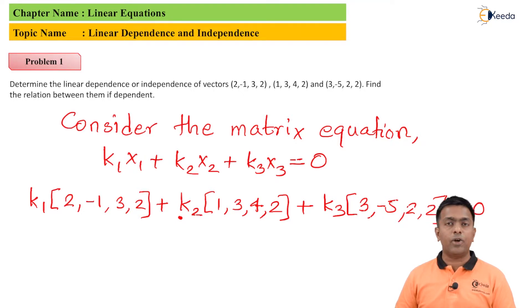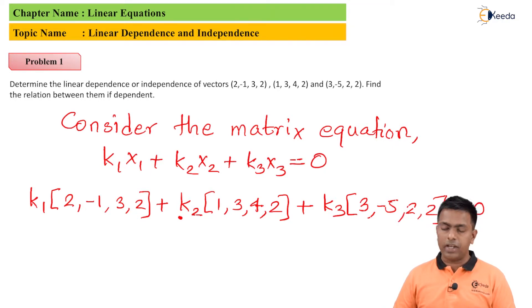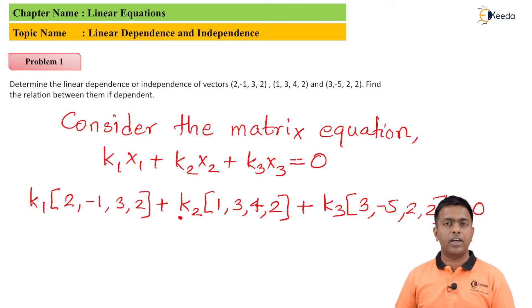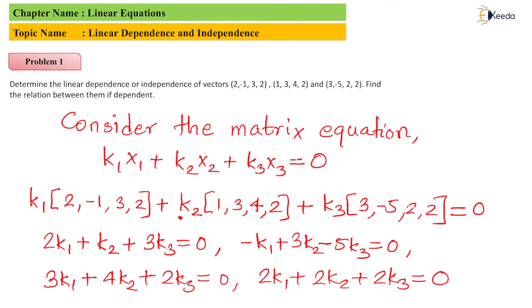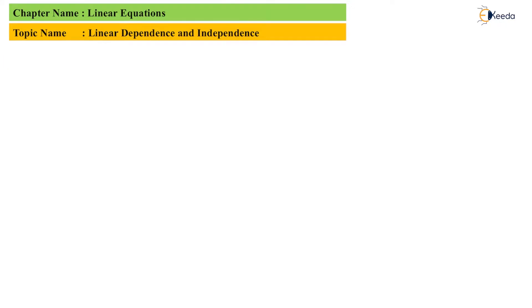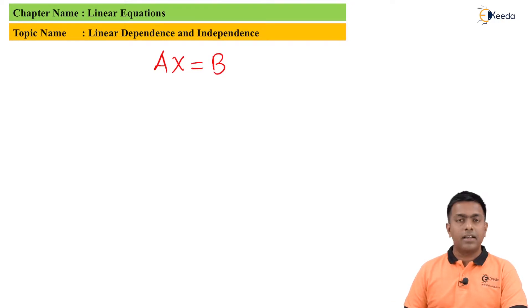For the second equation we take the second element of the vector: −1k1 + 3k2 − 5k3 = 0. Similarly we form four equations since each vector has four elements. From these four equations we convert to matrix form. As learned in 12th standard, it is given in the form Ax = b.